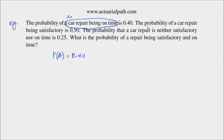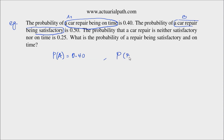The probability of a car repair being satisfactory is 0.5. Let's define event B to be the event that a car repair is satisfactory. So the probability of B is equal to 0.50.